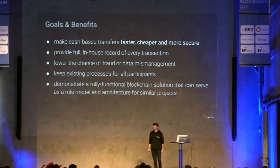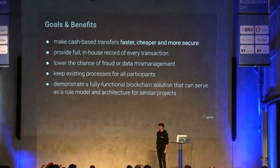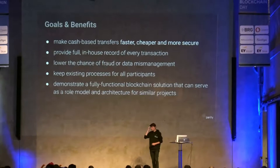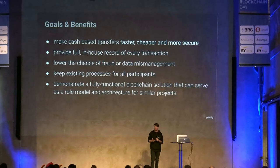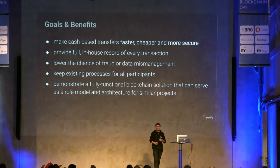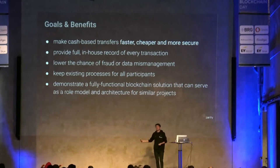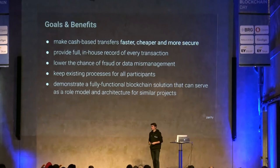The overall goal was to make cash-based transfers faster, cheaper, and more secure — reducing leakage, reducing corruption, and creating an audit trail. A key requirement was also that existing processes for World Food Programme staff, beneficiaries, and local vendors should not change as much as possible — meaning blockchain is fully abstracted as a background technology. And the nice thing is we can actually talk about this publicly, unlike most of our corporate projects.